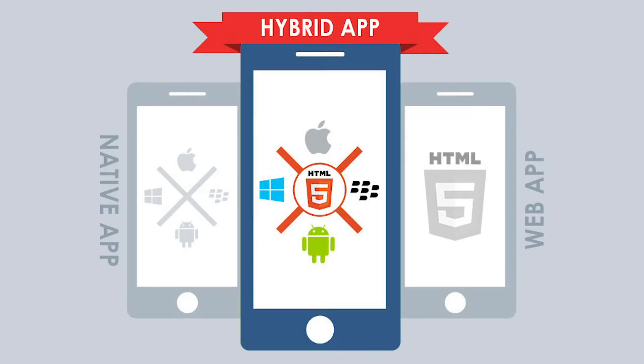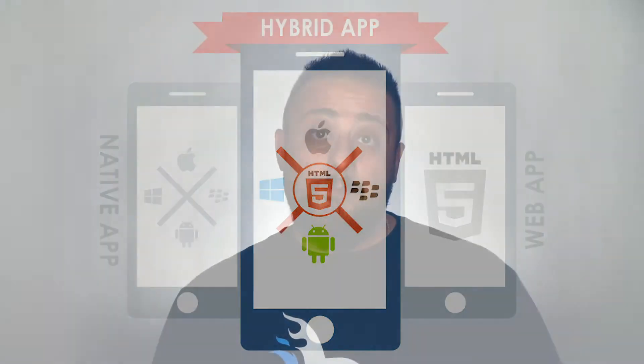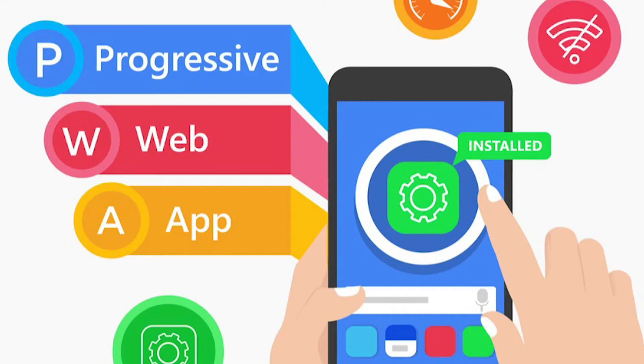Next up are hybrid apps. These are applications developed once but meant for multiple platforms. Most commonly you develop once and it works for iOS and Android, and some also extend their functionality to PWAs — progressive web apps — for those moving into more web-friendly environments.